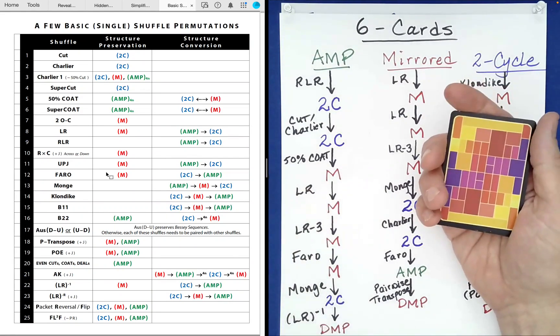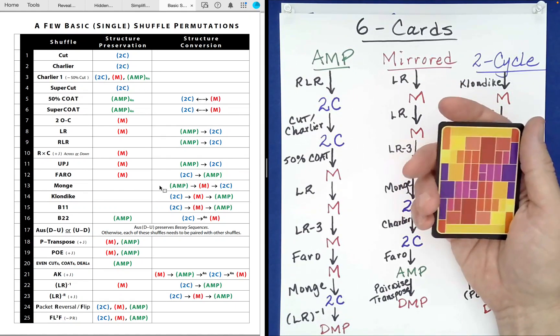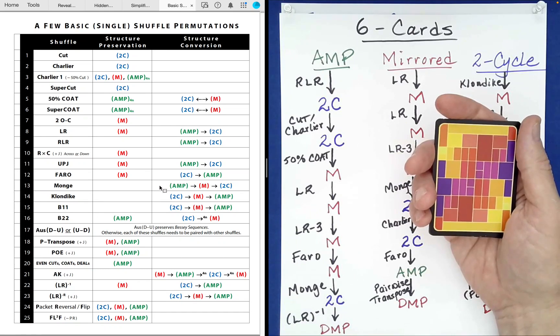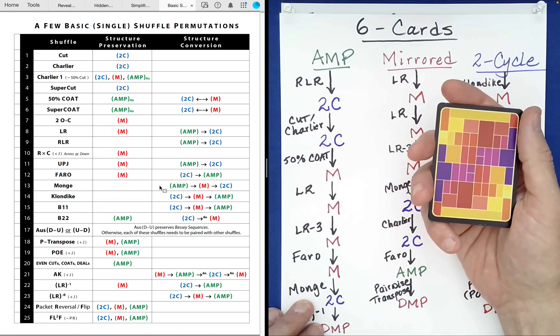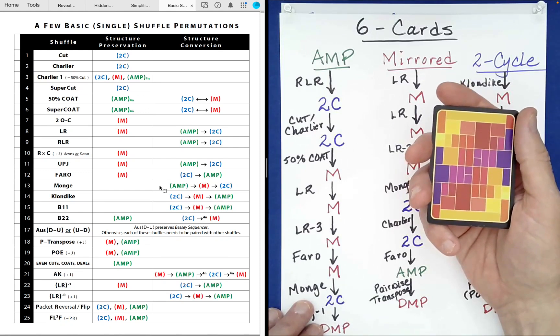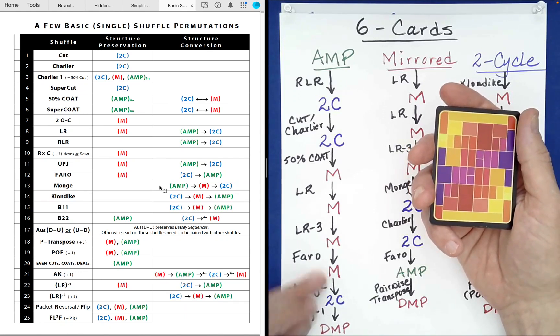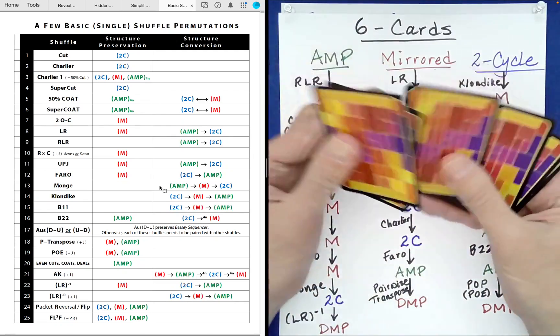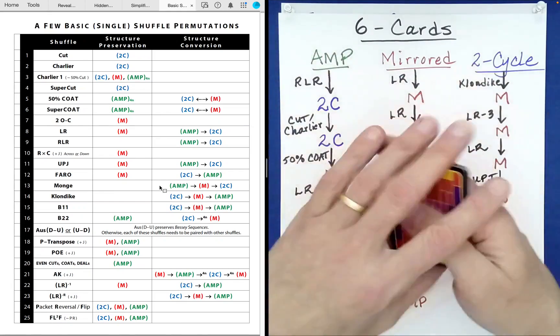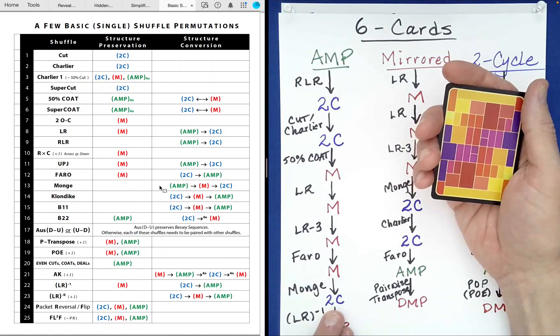And then we're going to do something called a mange. So that's line 13. And this is a powerful shuffle as well. It will take you from an AMP to a mirrored and from a mirrored to a two-cycle. Now the mange shuffle comes into varieties. One's called an over-under and the other one's the under-over. Both of them work just fine. They will convert a mirrored structure to a two-cycle structure. Okay? So why don't we do maybe an over-under, over-under, over. So that's a mange over-under. It is now a two-cycle.